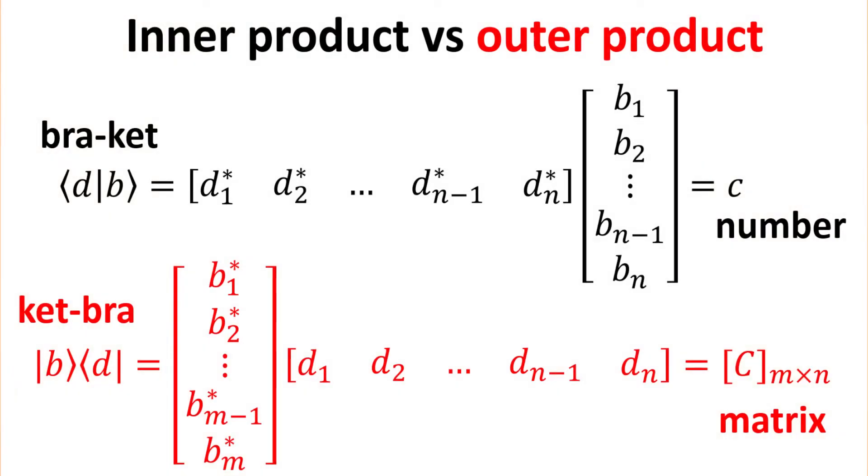Previously, we have seen that a bra multiplied by a ket gives us the inner product, which is a complex number. What happens when we have a ket multiply with a bra? In this case, we shall aptly call this an outer product. Unlike the inner product, the outer product yields a matrix instead, whose dimensionality is determined by the dimensionality of the d and b ket.